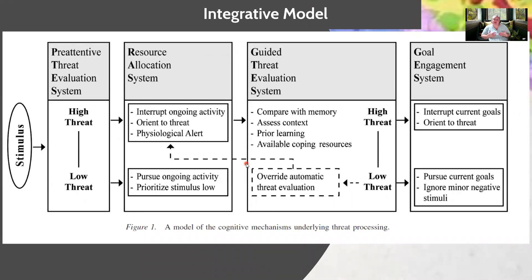I'm not going to go over this model in depth, but I did want to highlight that it is in the article I'm about to share the reference for. Bar-Haim and colleagues created an integrative model because, as we talked about earlier, there are cognitive theories that have led people to create different models of attentional bias and anxiety. They basically said that at that time, no existing model fully explained what they were finding in their meta-analysis. So they proposed this model of attentional bias to show the cognitive mechanisms underlying the attentional bias to threat and how it's being processed.